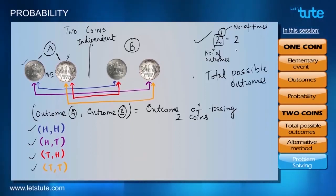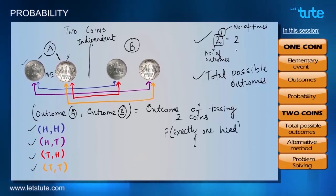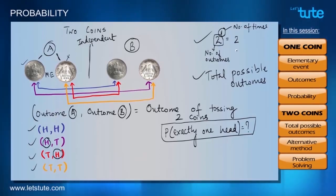Now, suppose we were to find out the probability of getting exactly 1 head upon tossing 2 coins. So, how will we go about it? So, we know that there are total of 4 possible outcomes. And we can see in outcome number 2 and outcome number 3, we have exactly 1 head. So, the probability is 2 out of 4 that is 1 by 2.